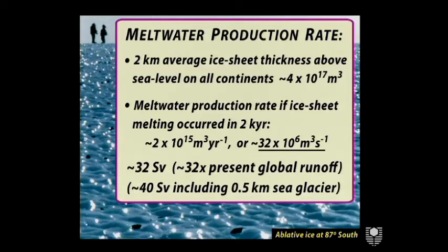The fast deglaciation has some important consequences. I did some estimates of the meltwater production rate. If the ice sheet melting occurs globally in 2,000 years with a two-kilometer average ice sheet thickness above sea level — the mean thickness of the East Antarctic ice sheet — the meltwater production rate is over 30 sverdrups, which is 30 times present runoff. Probably this estimate is too high, but even taking half of it, 16 sverdrups, that's still 16 times modern runoff. And the 32 increases to 40 if you include the sea glacier. So the meltwater production rates are enormous.